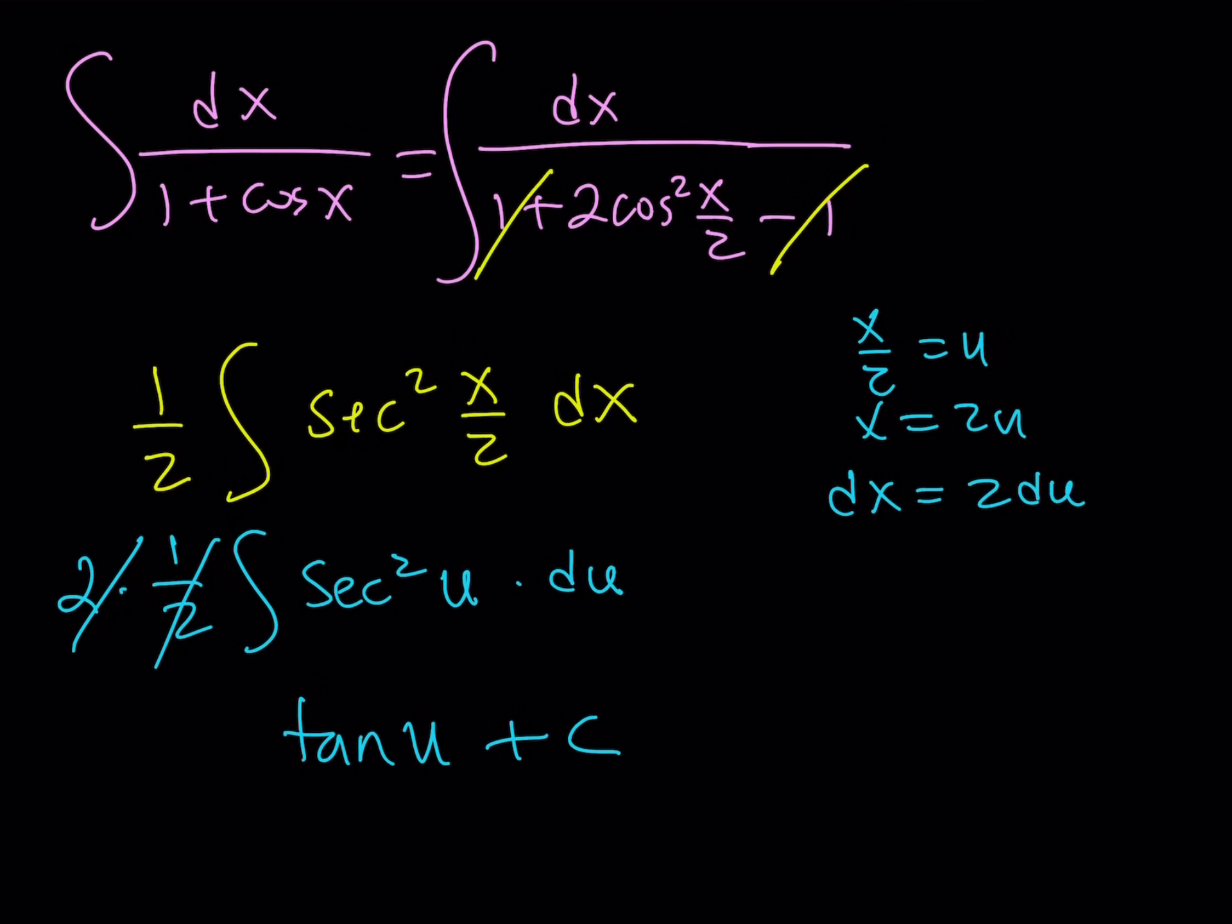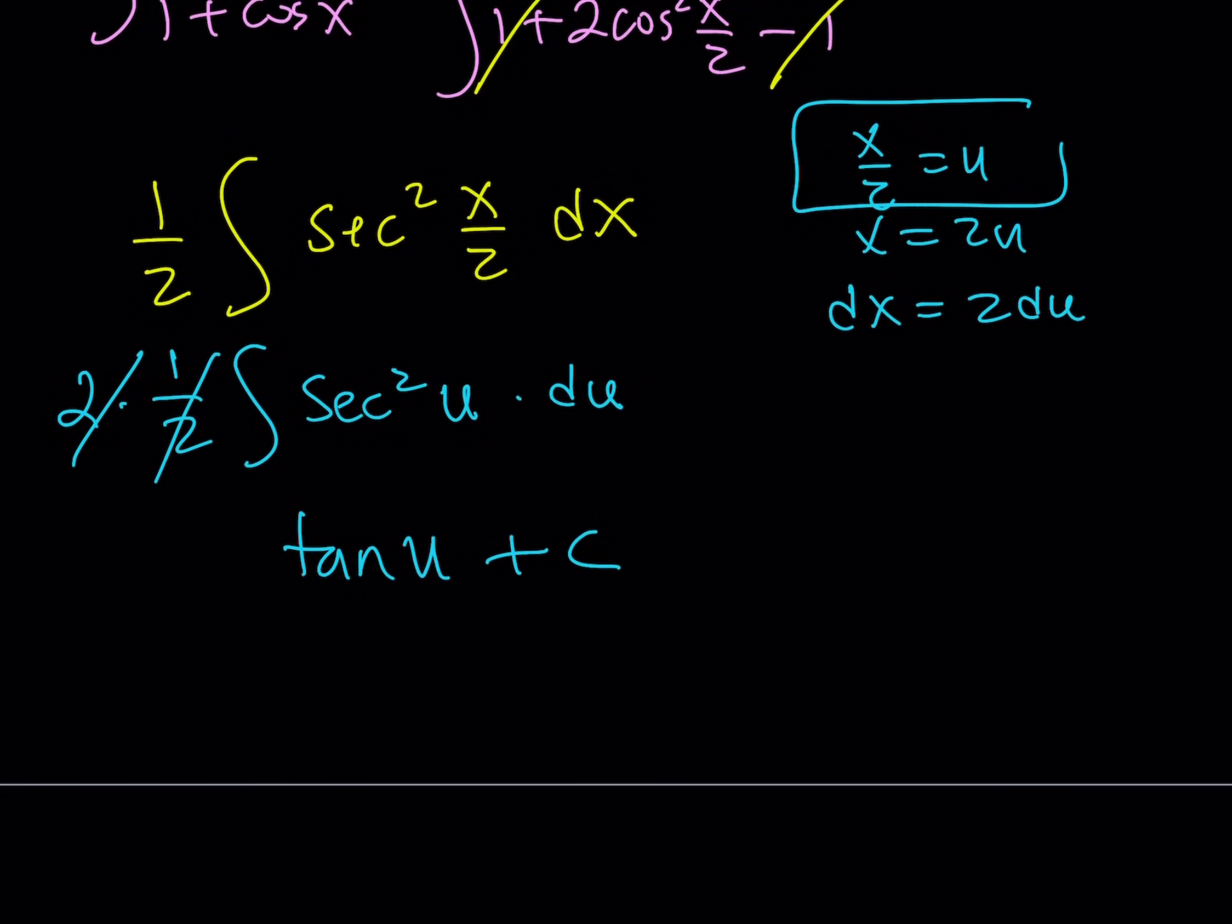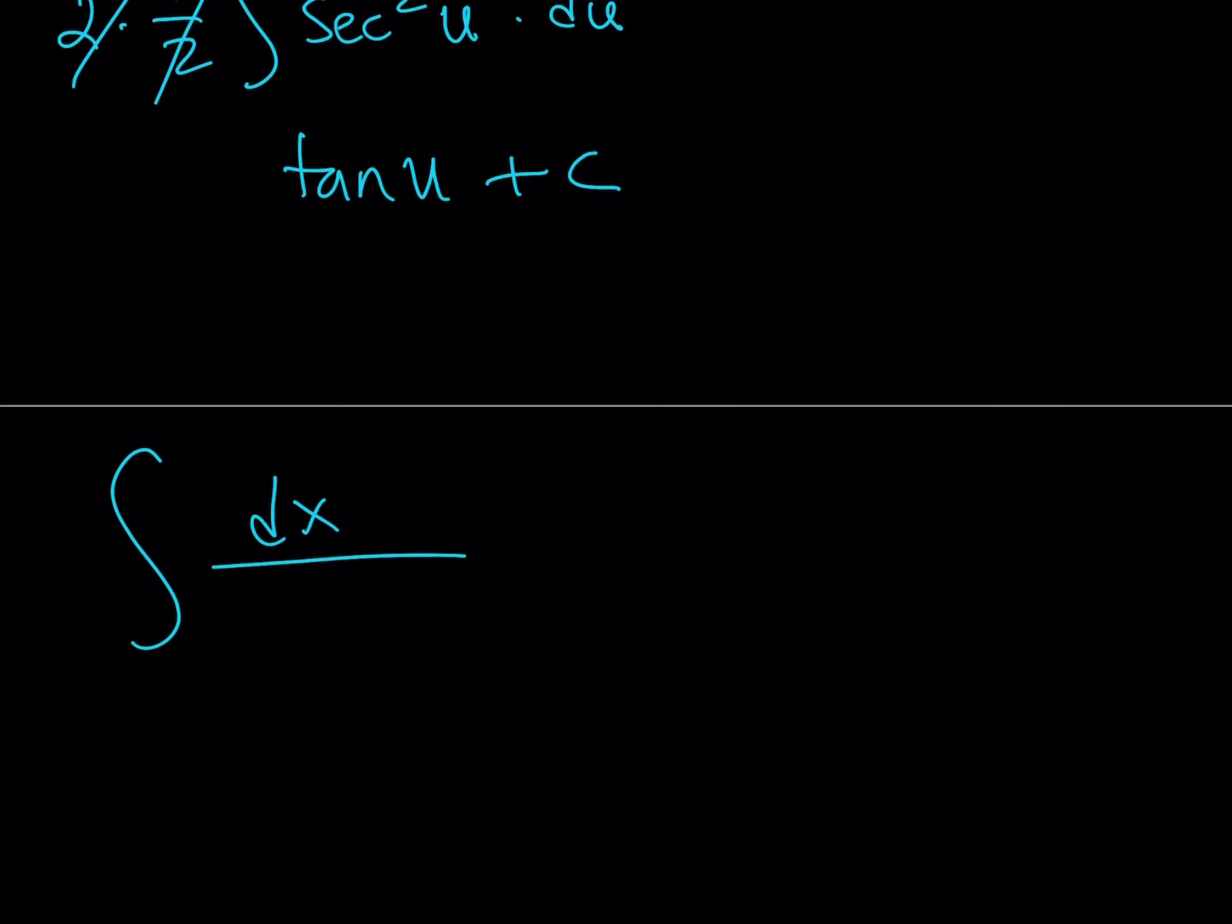This constant doesn't have to be the same as another constant. But u equals x over 2, so I can back substitute. This gives me the integral of dx over 1 plus cosine x one more time as tangent x over 2 plus c.